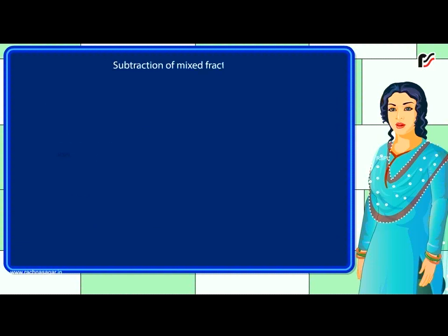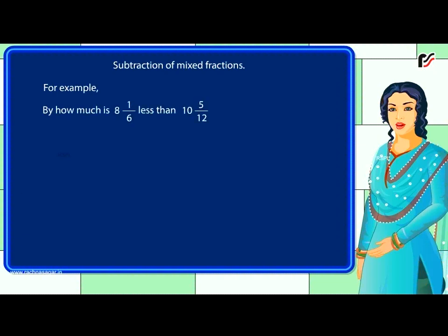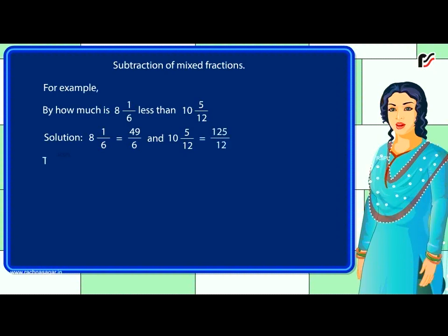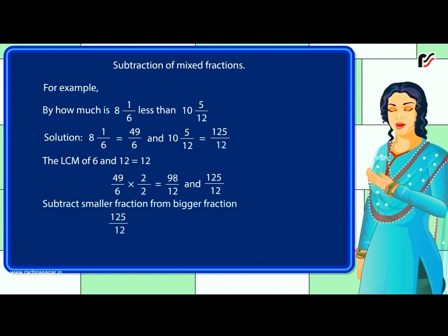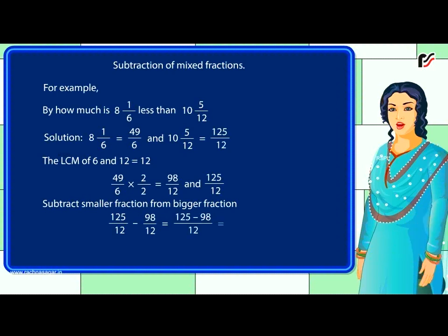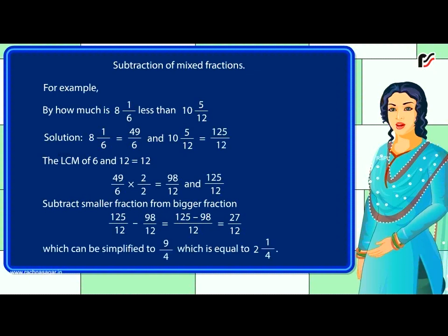Subtraction of mixed fractions. For example, by how much is 8 and 1 by 6 less than 10 and 5 by 12? Solution: 8 and 1 by 6 equals 49 by 6 and 10 and 5 by 12 equals 125 by 12. The LCM of 6 and 12 is 12. 49 by 6 becomes 98 by 12. Subtract the smaller from the bigger: 125 by 12 minus 98 by 12 equals 27 by 12, which simplifies to 9 by 4, which equals 2 and 1 by 4.